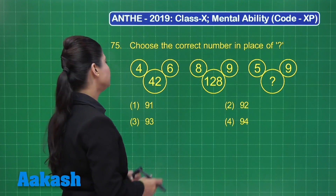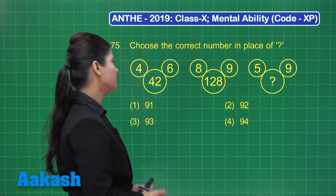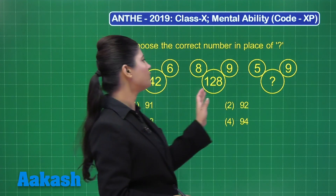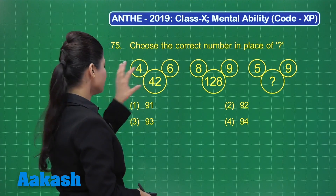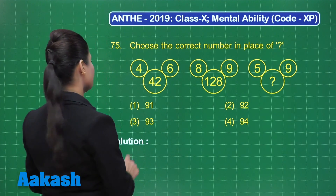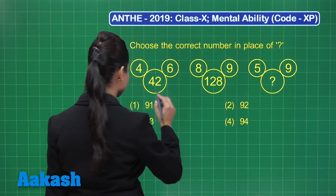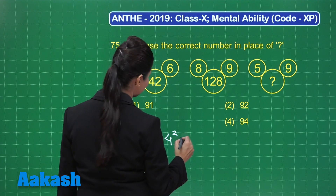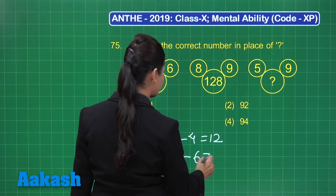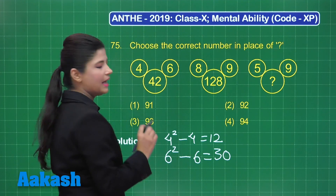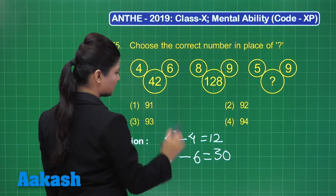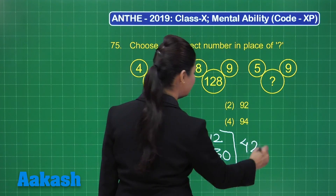Now let's move to question number 75. It states: choose the correct number in place of the question mark. We have an arrangement of numbers that follow some pattern, and the same pattern is followed in each sequence. Let's identify the pattern: for the number 4, the square of 4 is 16, and 16 minus 4 gives 12. Similarly, the square of 6 is 36, minus 6 gives 30. The sum of 12 and 30 gives the third number 42.